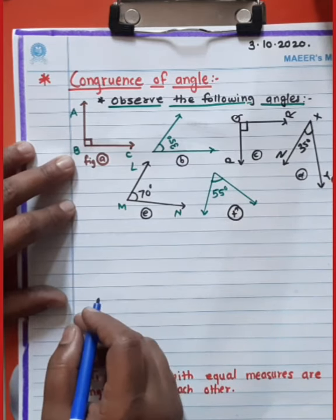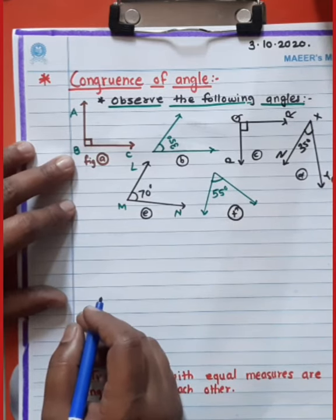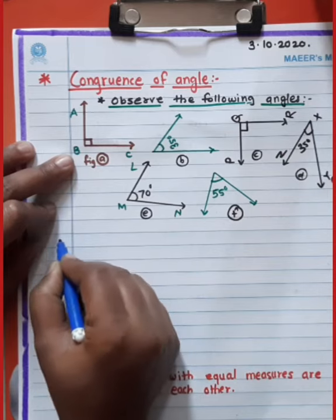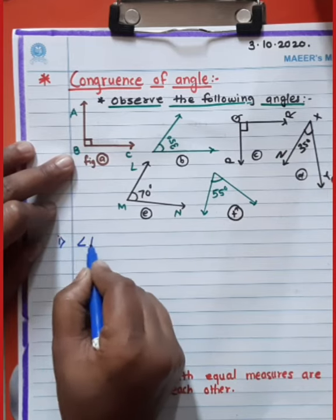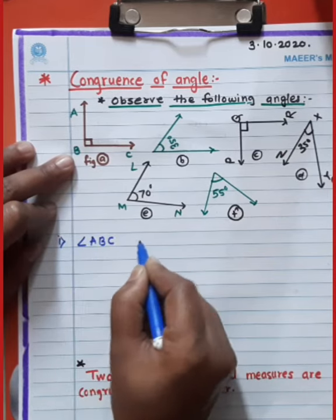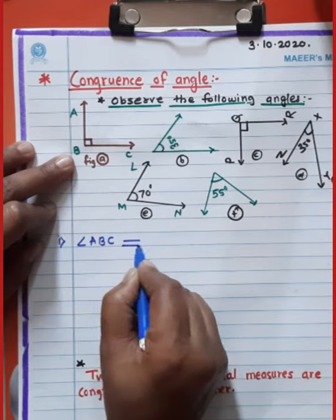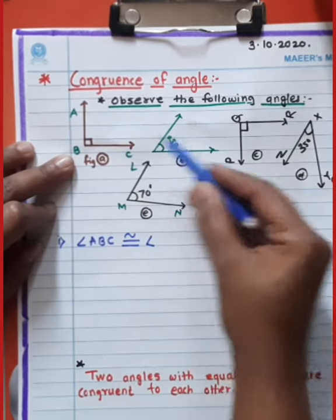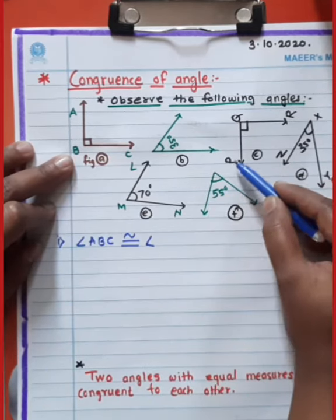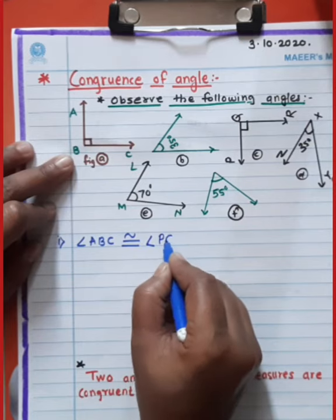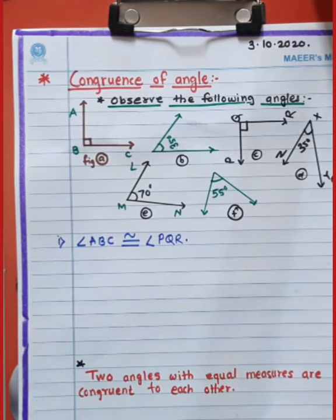How can we write that the two angles are congruent? Angle ABC is congruent to angle PQR. So we write: angle ABC congruent angle PQR.